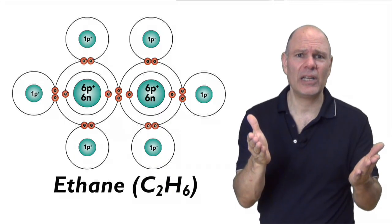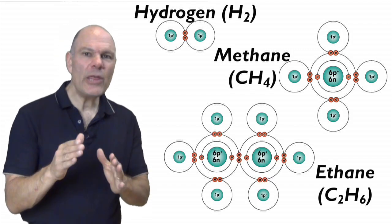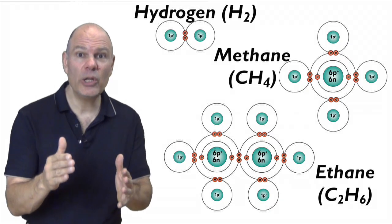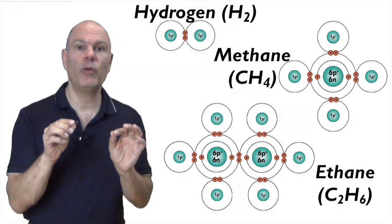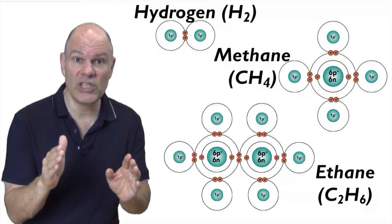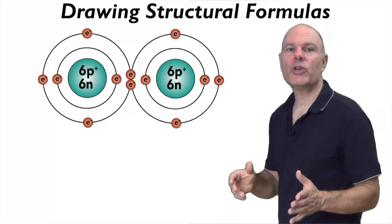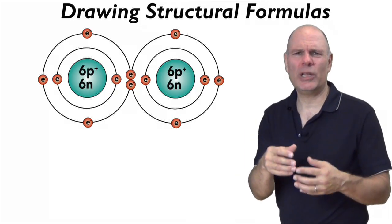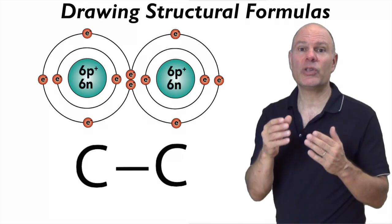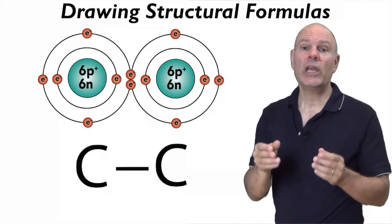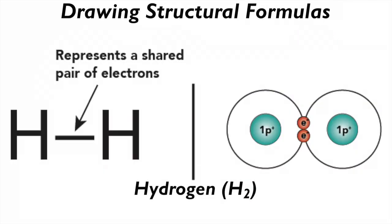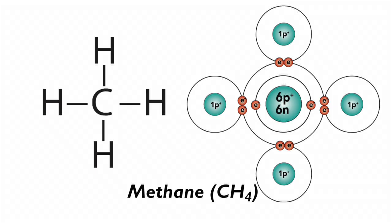Isn't covalent bonding fantastic? So far we've met three covalently bonded molecules: hydrogen H2, methane, and ethane. Now we're going to start using a different way of representing these molecules called a structural formula — which you'll use throughout the rest of your studies in biology. There are two rules: first, use a chemical symbol to represent each atom; second, represent each shared pair of electrons with a dash. Here's the structural formula for hydrogen and methane, shown alongside orbital models for comparison.